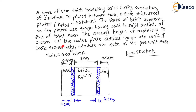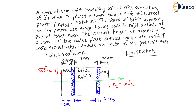Let us say one surface is at temperature T1 = 500°C and the other at T2 = 100°C. As T1 is greater than T2, heat will flow from T1 to T2, that is from left to right along the X direction.